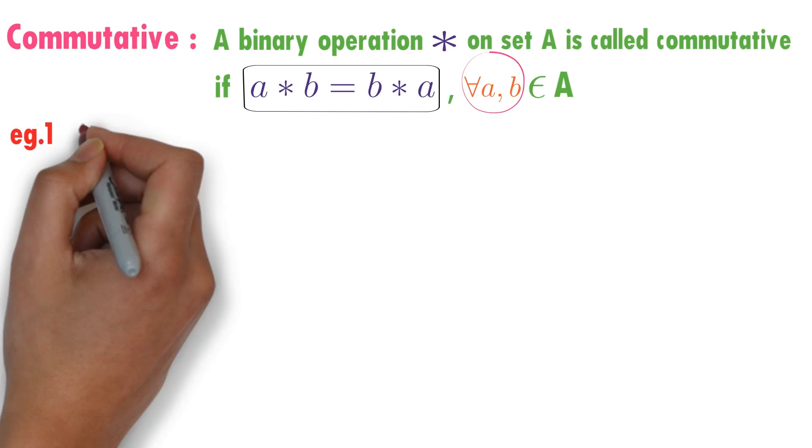I will try to explain this definition with one example. Let star be a binary operation on the set of all integers. Star is already a binary operation on the set. How is star defined? A star B equals A minus B. Is star commutative?